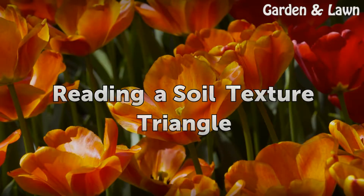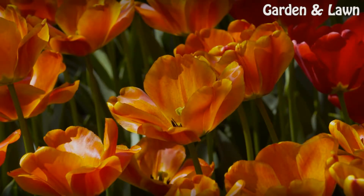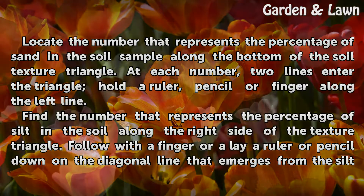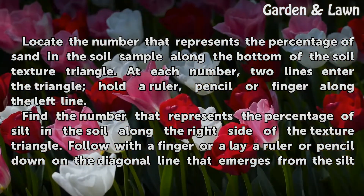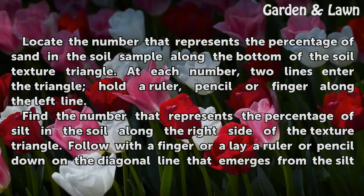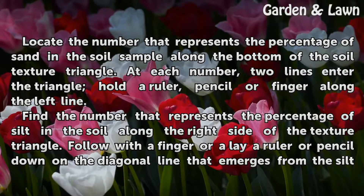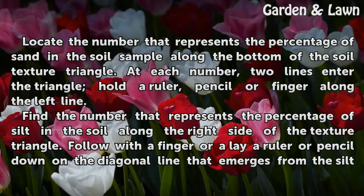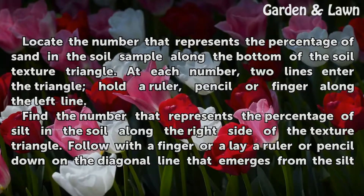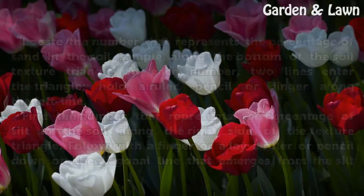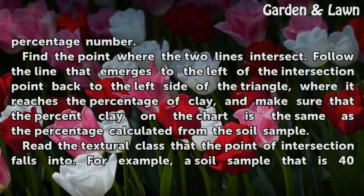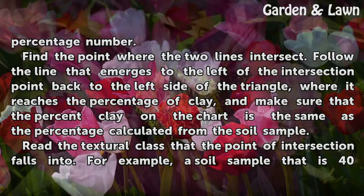Reading a soil texture triangle. Locate the number that represents the percentage of sand in the soil sample along the bottom of the soil texture triangle. At each number, two lines enter the triangle — hold the ruler, pencil, or finger along the left line. Find the number that represents the percentage of silt in the soil along the right side of the texture triangle. Follow with a finger or lay a ruler or pencil down on the diagonal line that emerges from the silt percentage number. Find the point where the two lines intersect.